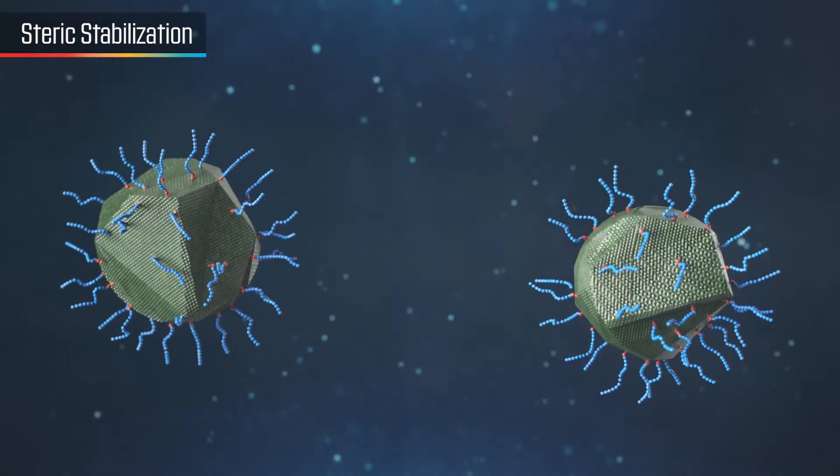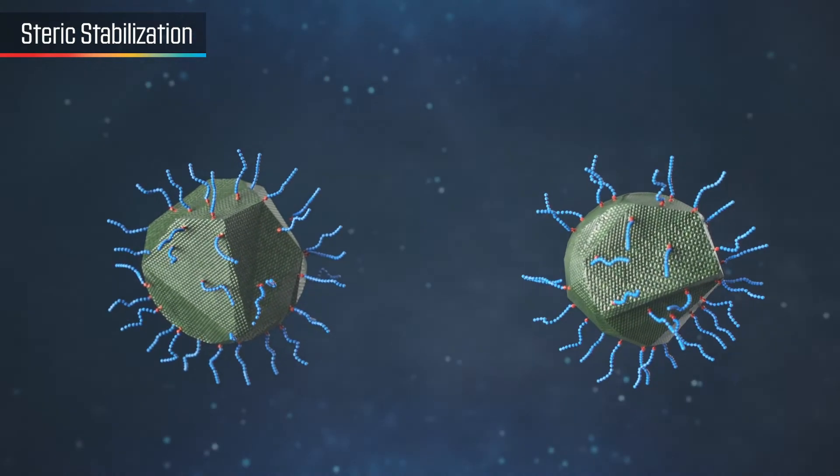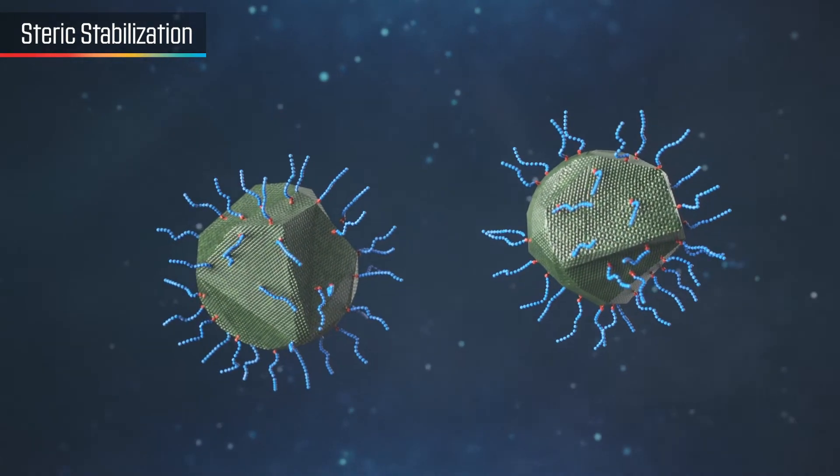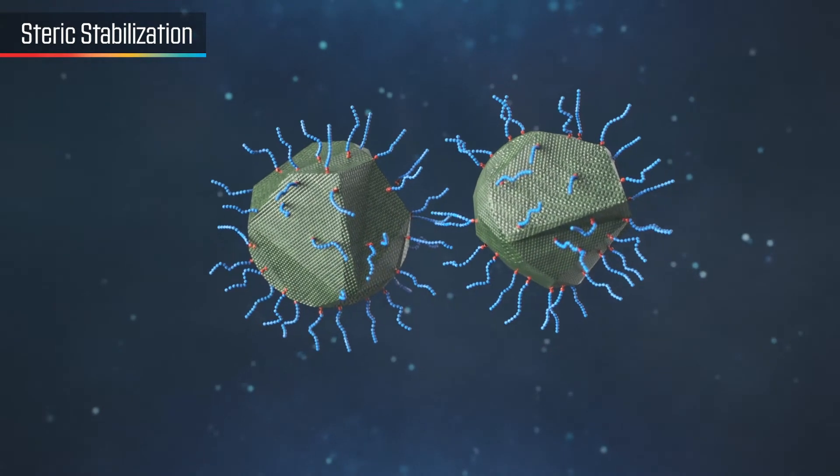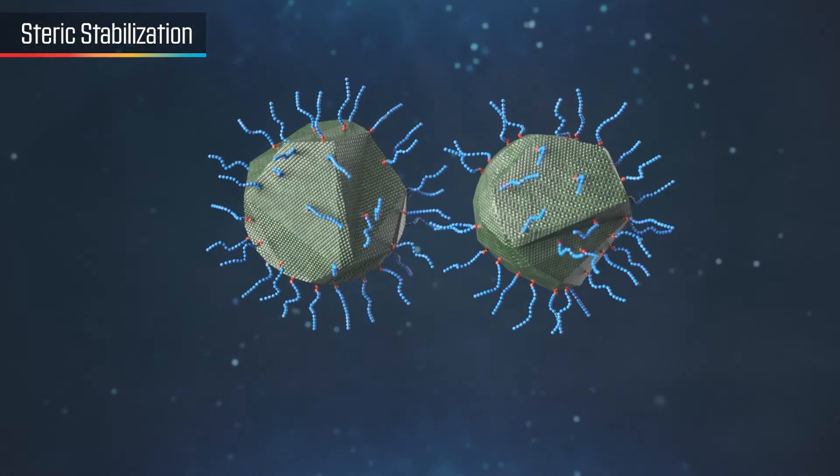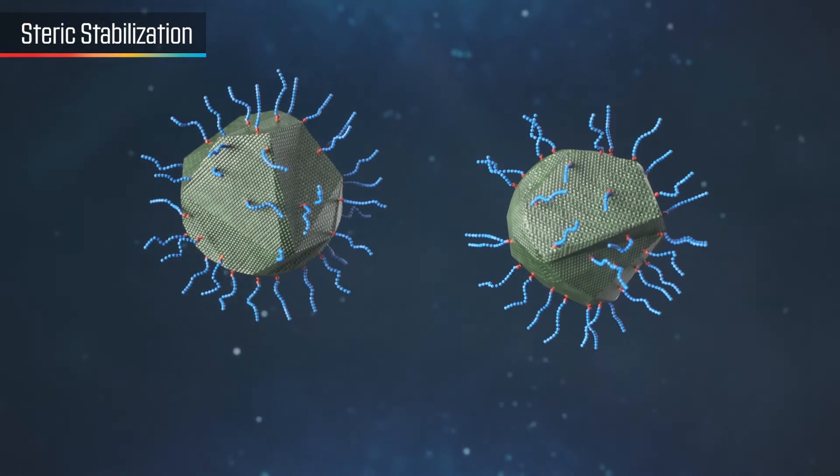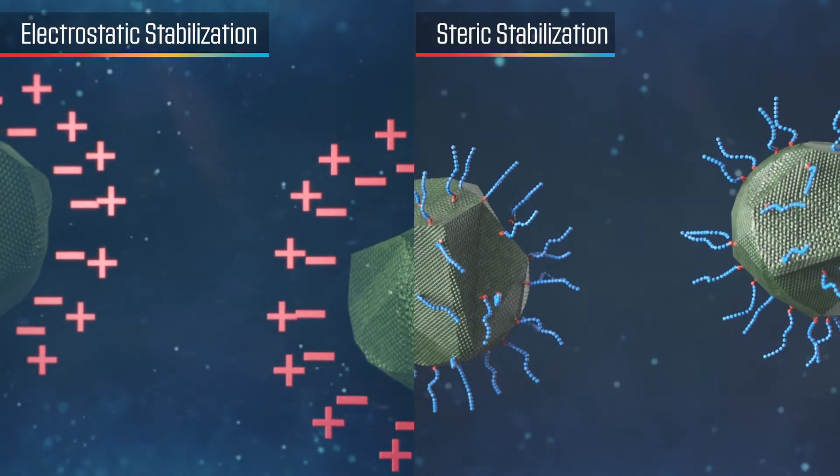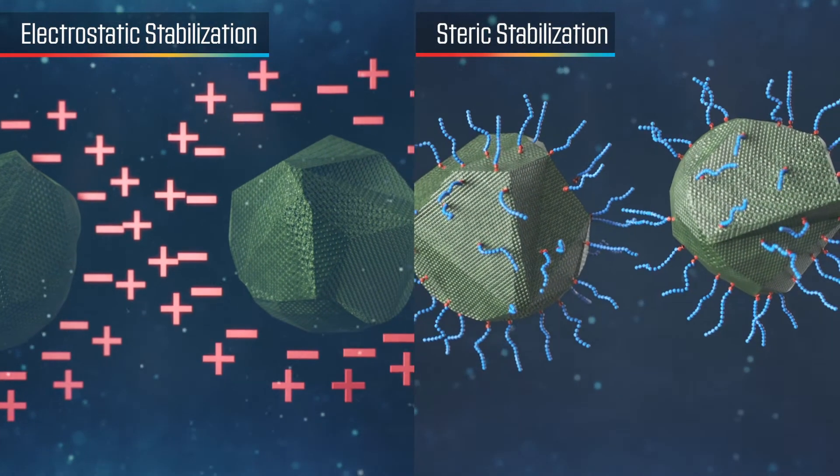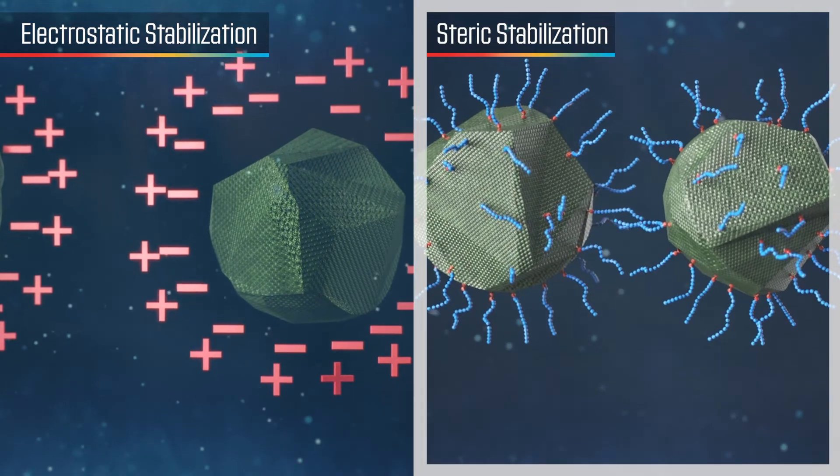Steric stabilization, which physically separates the particles, was originally designed for use in low-to-medium polarity systems, but its use has been extended for all polarities. The dominant mechanism for stabilization with Solsperse hyperdispersants is steric.